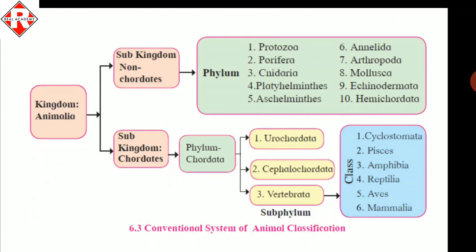Non-chordate kingdom is divided into different phyla: Protozoa, Porifera, Cnidaria, Platyhelminthes, Aschelminthes, Annelida, Arthropoda, Mollusca, Echinodermata, and Hemichordata. Sub-kingdom Chordata includes all organisms in phylum Chordata, which is further divided into three sub-phyla: Urochordata, Cephalochordata, and Vertebrata. Vertebrata is further divided into six classes: Cyclostomata, Pisces, Amphibia, Reptilia, Aves, and Mammalia.